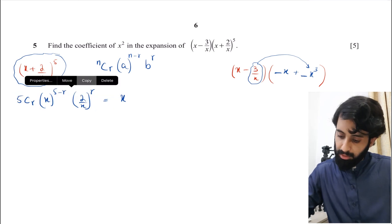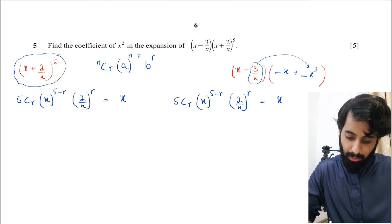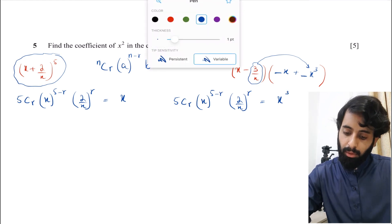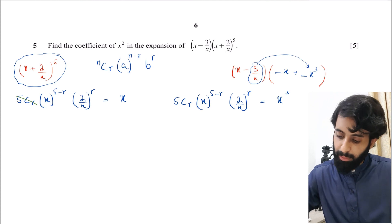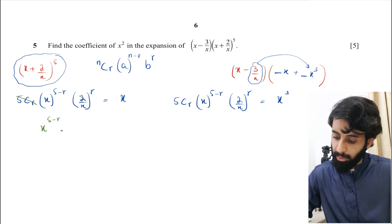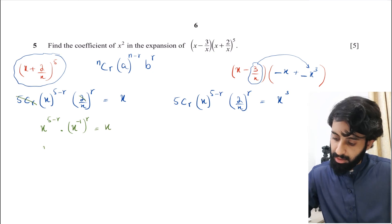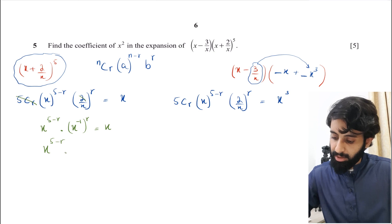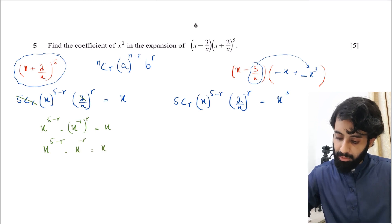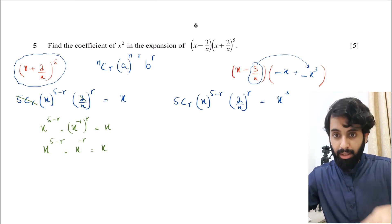I'm going to ignore 5Cr and the numerical coefficient for now, and just focus on the powers of x. x^(5−r) multiplied by (x in the denominator)^r — since x is in the denominator of (2/x), it becomes x^(−1), raised to the power r. So I need x^(5−r) · x^(−r) to equal x.